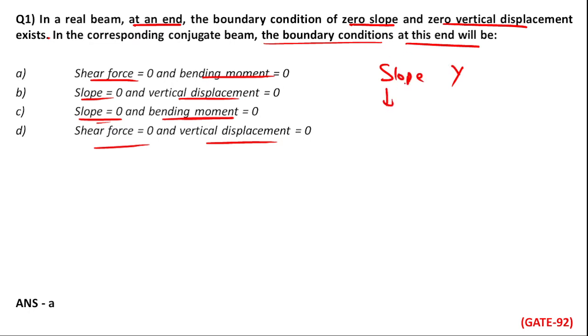Suppose this has slope. In conjugate beam, what will be the corresponding value? Shear force. If your slope is zero, then shear force will also be zero. So what will happen with y? Your bending moment will be zero. Y means displacement will be zero. Bending moment will be zero.